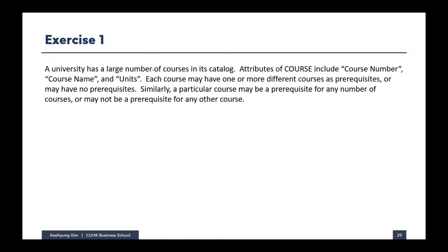The first thing is the business events and business rules — everything is here. You have to infer the entity first: what is the main entity for which you want to store information? As you can see from this example, it's all about the course, so course can be the entity here.